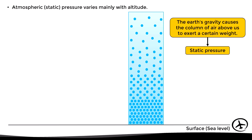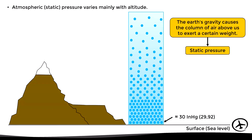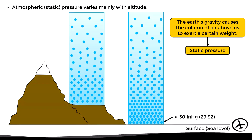At sea level, this static pressure is approximately 30 inches of mercury — to be exact, under standard conditions it is 29.92 inches of mercury. However, this value may vary slightly depending on weather conditions. As we climb in the atmosphere we experience less static pressure. For example, if we climb a mountain, the column of air above us is shorter, meaning there is less air exerting weight on us, and therefore the static pressure is reduced.